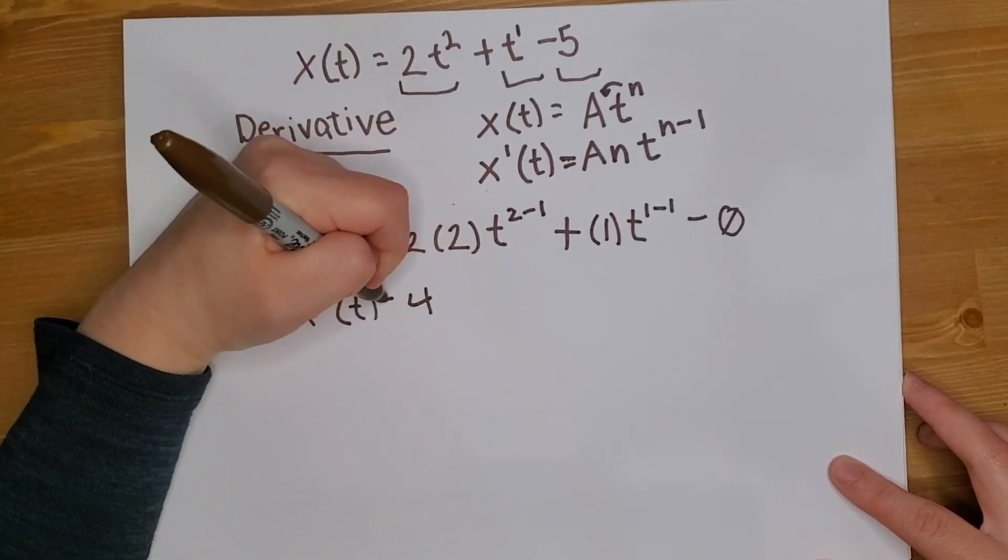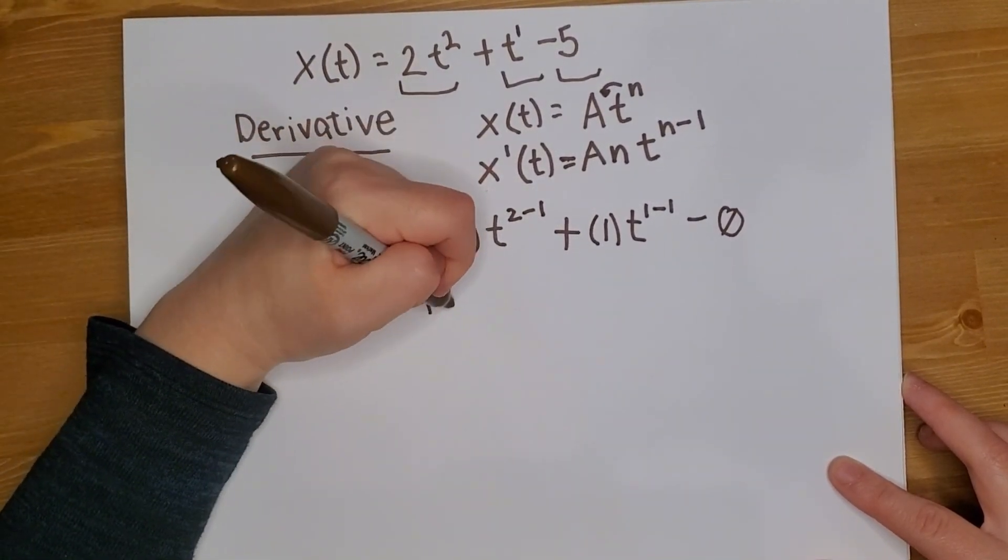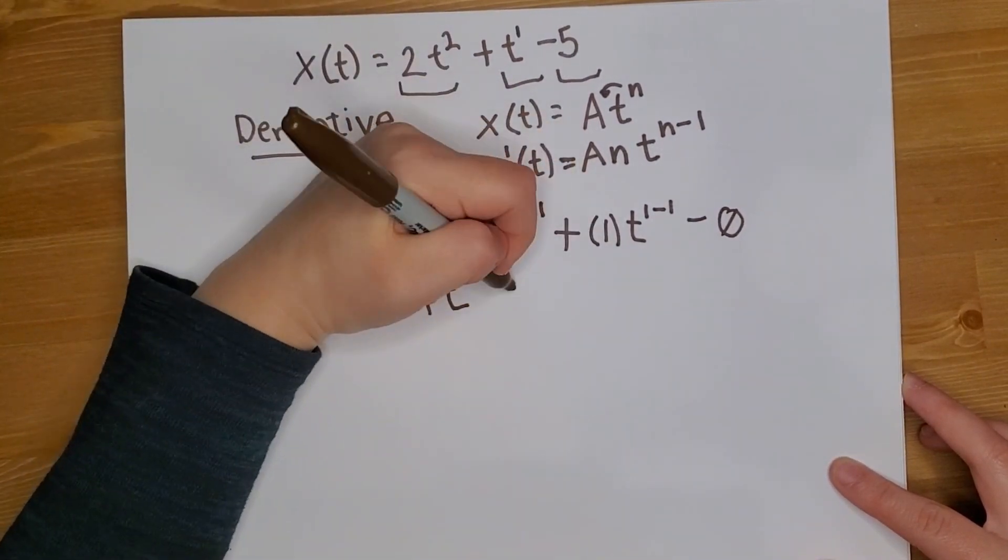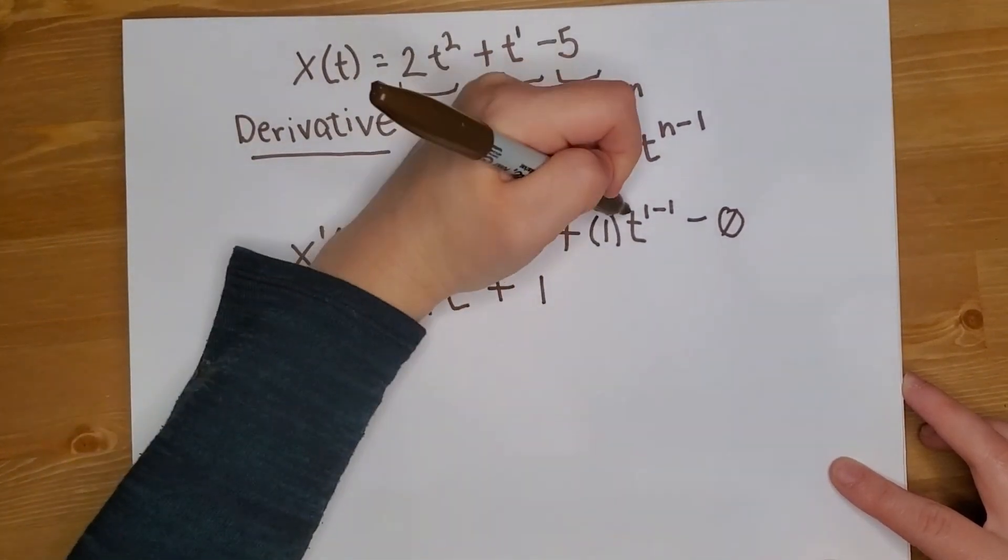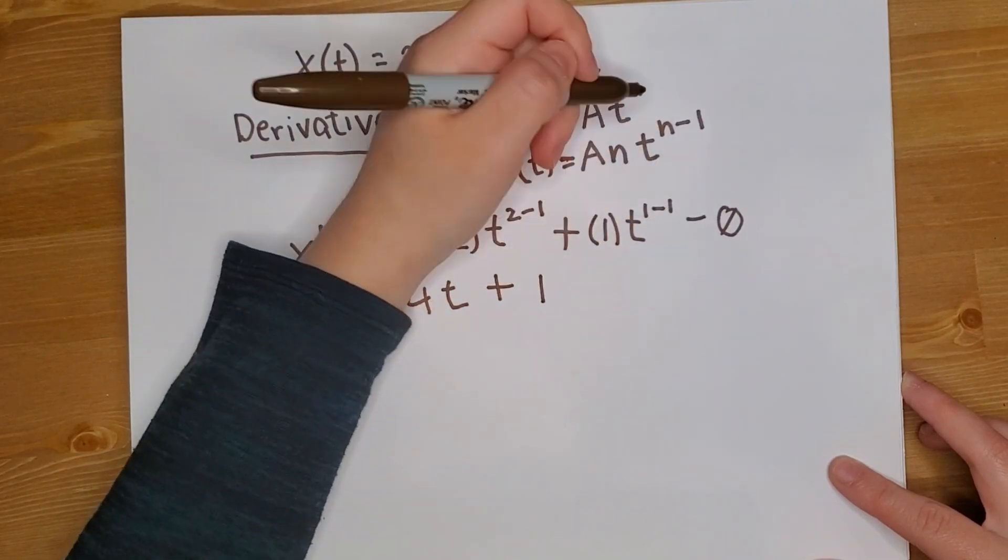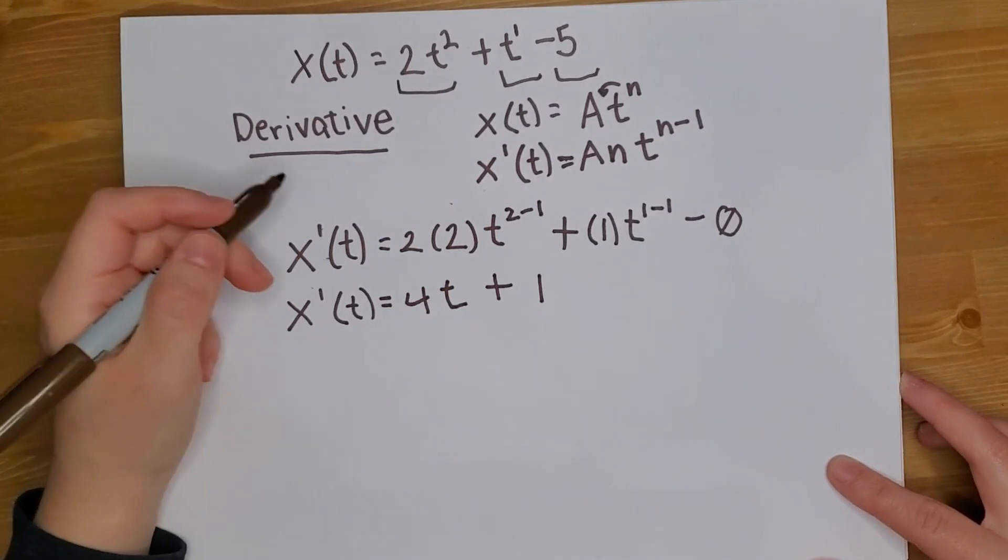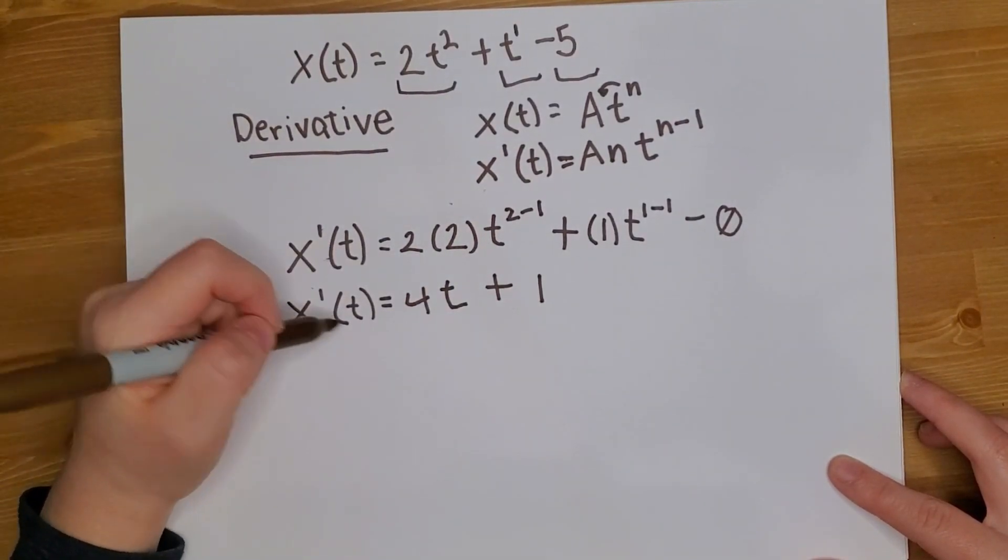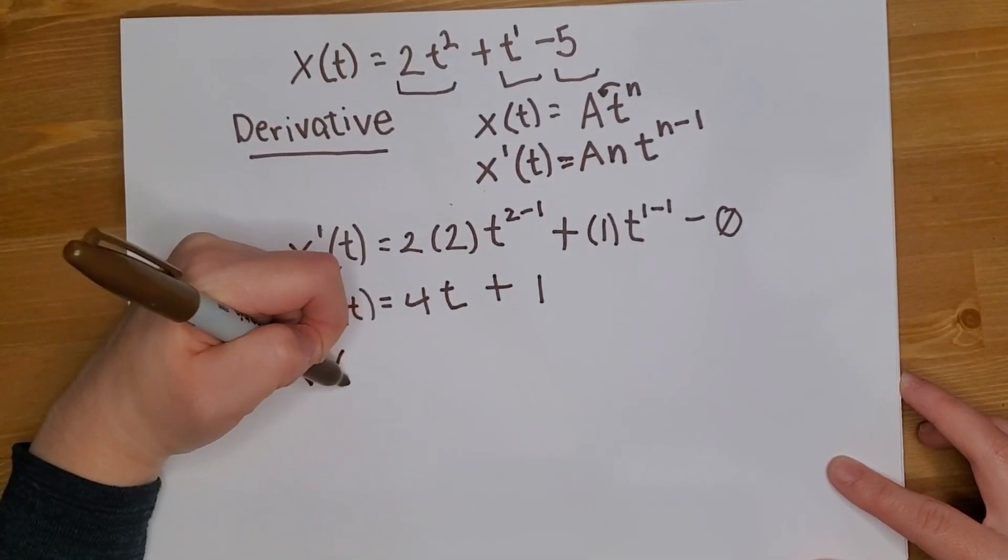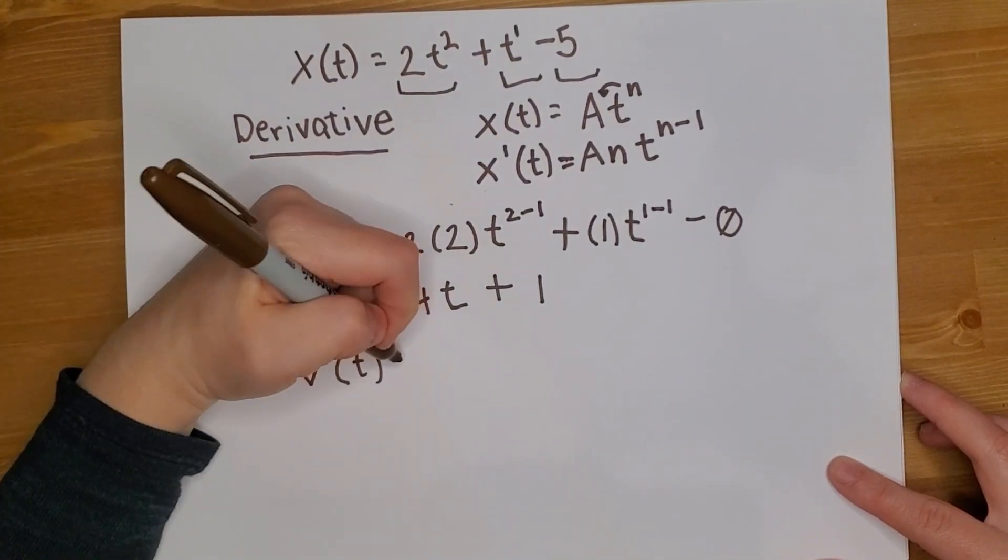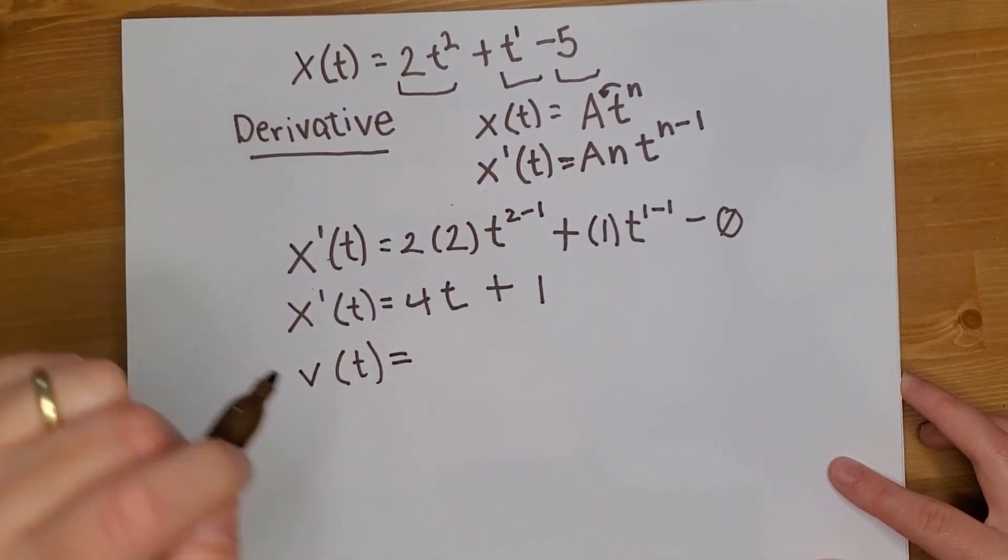Once we solve this, we have, equal to 4. So 2 minus 1 is just 1, it's just a t, plus 1, and t to the 0 is just a constant 1, right? So we don't have to add anything there. That's our equation. This is our velocity equation. The slope of that position time graph is actually the velocity, it's how fast the particle is moving through time.